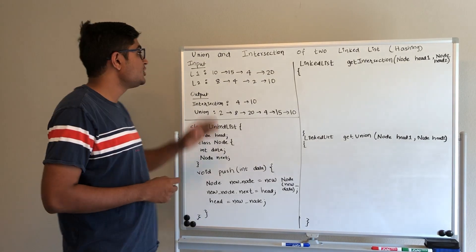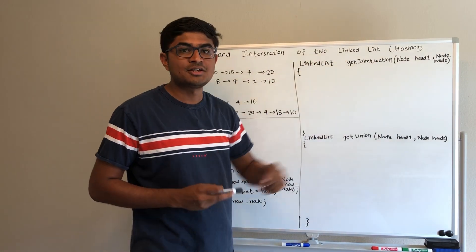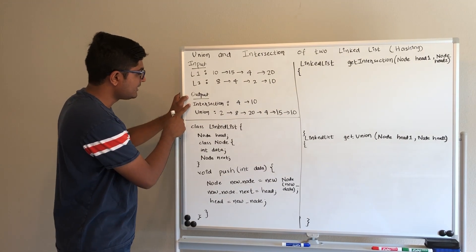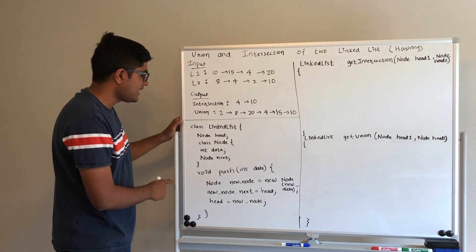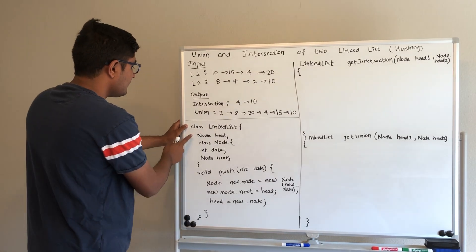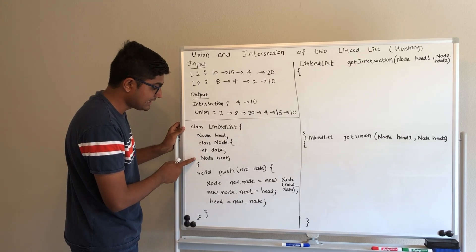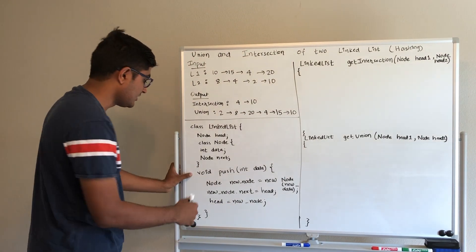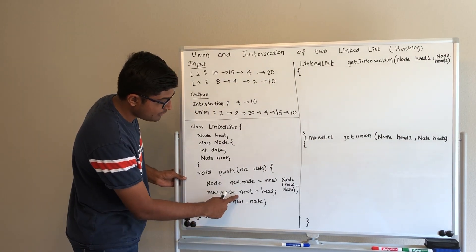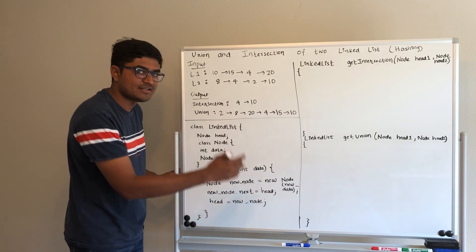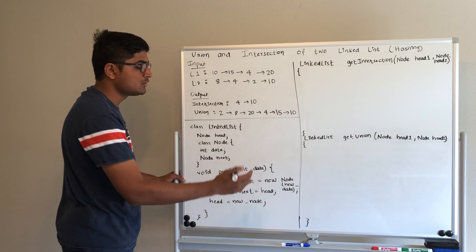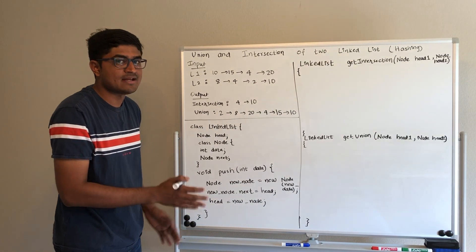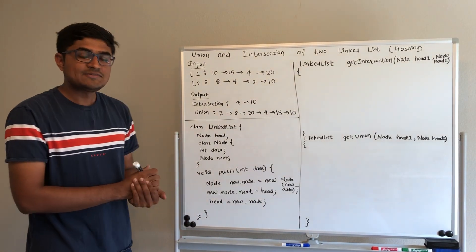Today we will find the union and intersection of two linked lists using the hashing method. You will be given two input linked lists and will have to find the intersection list and union list as output. The linked list format has a head node with data and a next pointer. The push method adds an element at the front by creating a new node, pointing its next to the existing head, and updating the head to this new node.